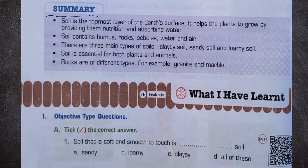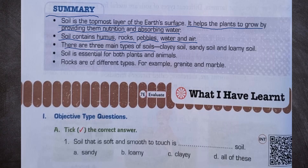Summary: Soil is the topmost layer of the earth's surface. It helps plants to grow by providing nutrition and absorbing water. Soil contains humus, rocks, pebbles, water, and air. There are three main types of soil: clay soil, sandy soil, and loamy soil. Soil is essential for both plants and animals. Rocks are of different types — for example, granite and marble.